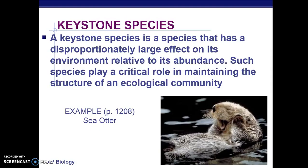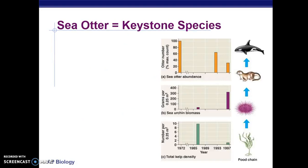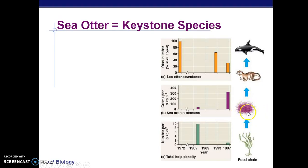Sea otters are cute, but actually not the nicest creatures in the world. Looking at this food chain — as you go up, the thing above eats the thing below — killer whales eat sea otters, sea otters eat sea urchins, and sea urchins eat kelp. In this community, it's the role of the sea otter to control the sea urchin population.